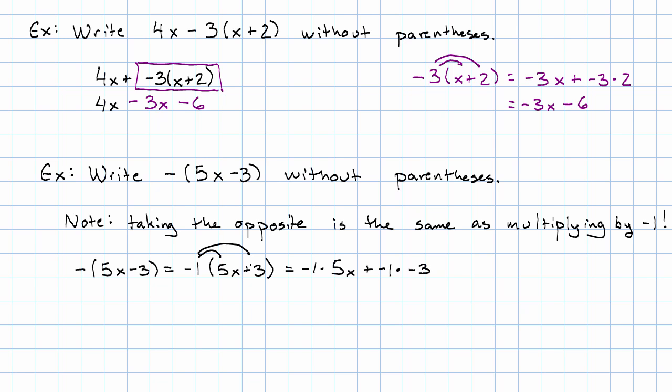Again, minus 3 means plus negative 3. Actually doing the multiplication, negative 5x plus 3 is what we get, written without parentheses.